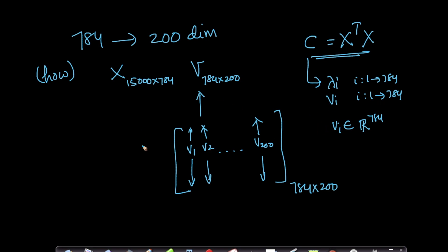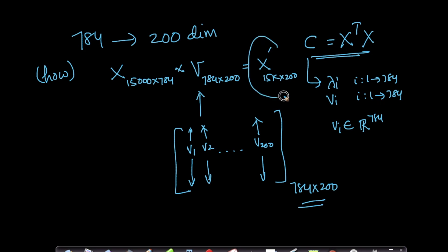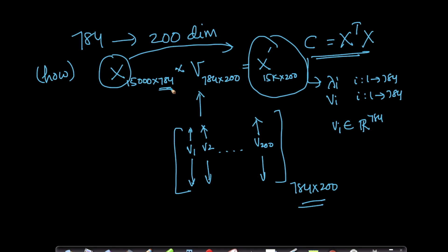By stacking each of my eigenvectors, I created a matrix which is 784 × 200. Now if I multiply X with V, I get X' which is 15k × 200 — this is my representation of the data points in a 200-dimensional space. This is exactly what we did even for two dimensions, just with 2 instead of 200. This is how we convert data from 784 dimensions to 200 dimensions using PCA.